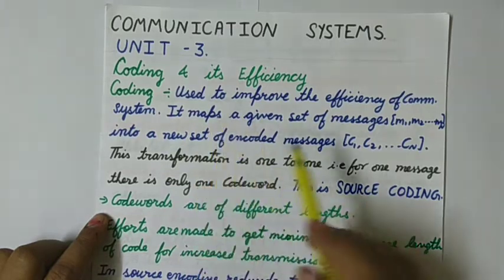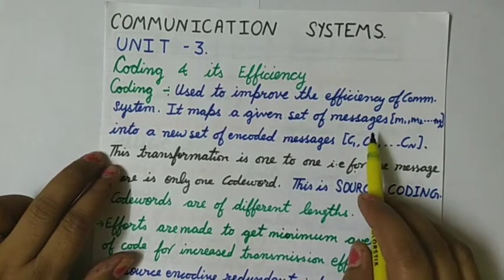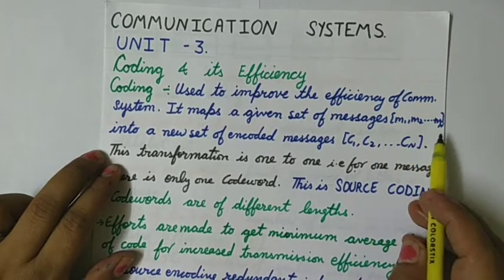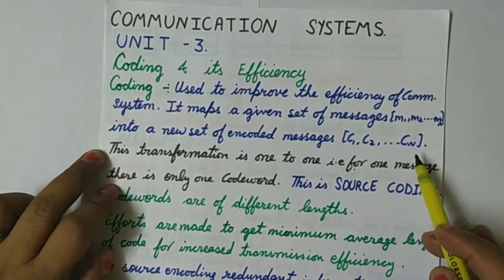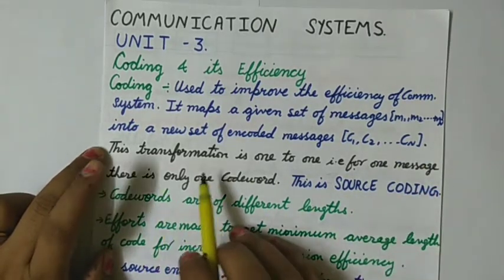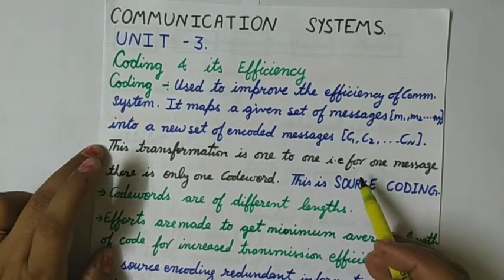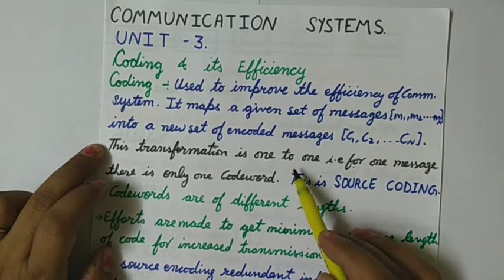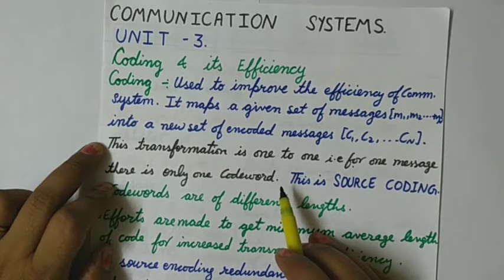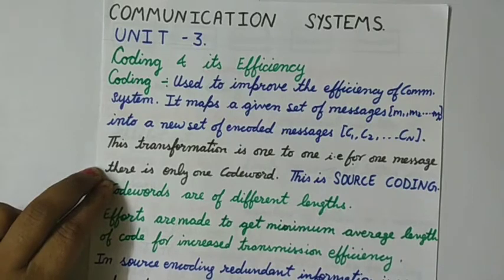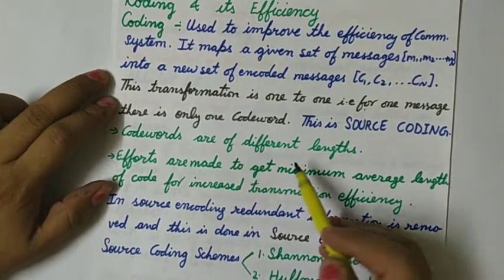Coding is used to improve the efficiency of a communication system. It maps a given set of messages from a source — say m1, m2, up to mN — into a new set of encoded messages c1, c2, up to cN. This transformation gives one code word to each message, so it is a one-to-one mapping. One message gets one code word, and that code word cannot be given to any other message. This is called source coding.